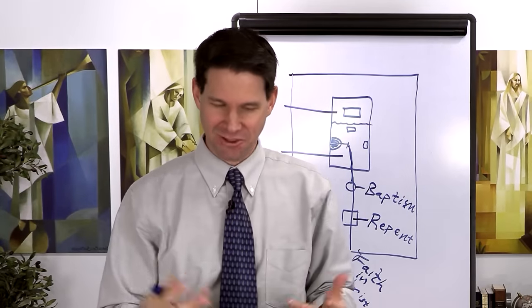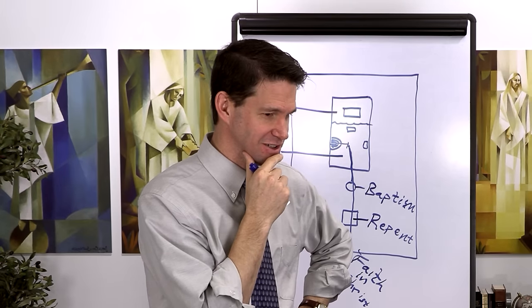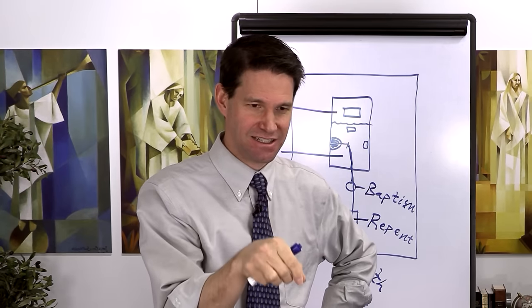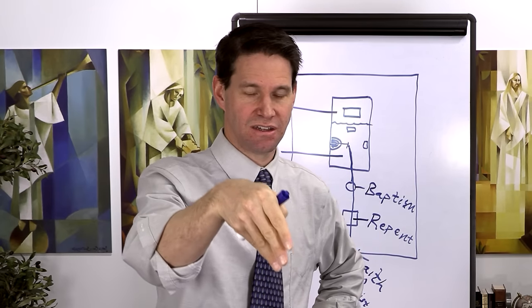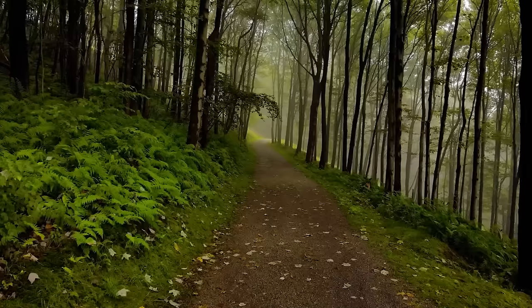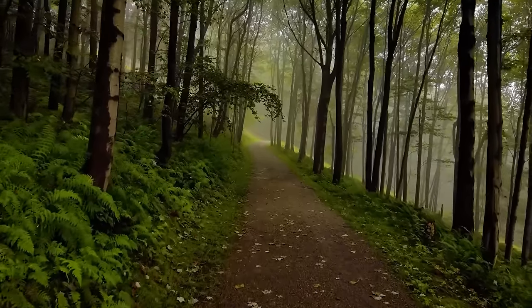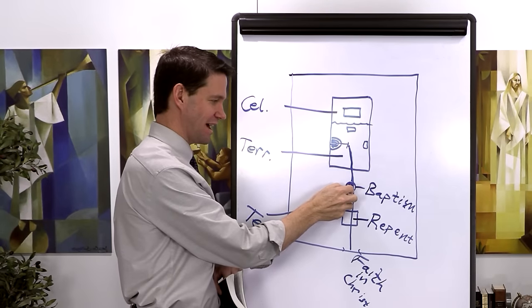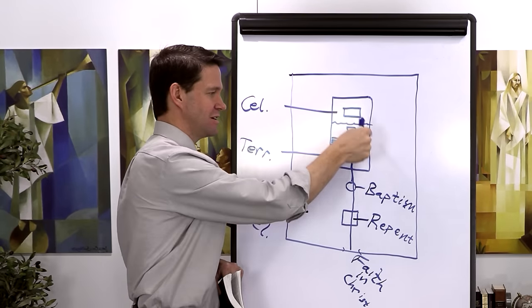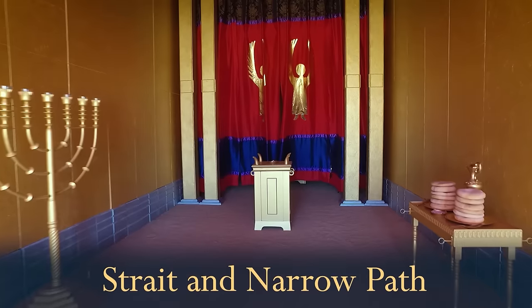It makes you wonder if there's a mistake. But notice verse 19: 'And now, my beloved brethren, after you've gotten into this straight and narrow path.' So it wasn't a mistake—Nephi is serious about saying 'in' and 'into' a path, not 'on' and 'onto' the path. The only way I can reconcile that is if the path is symbolized by something that is actually inside something. Brothers and sisters, the holy place is the straight and narrow path in this symbolic interpretation.